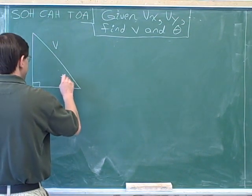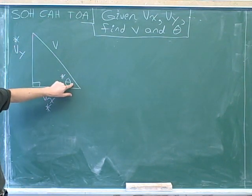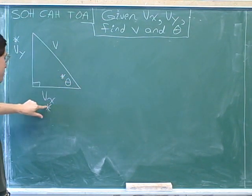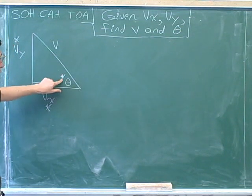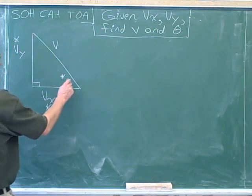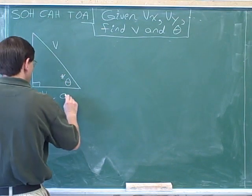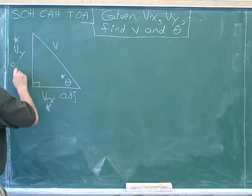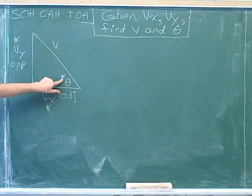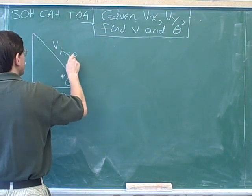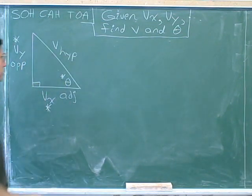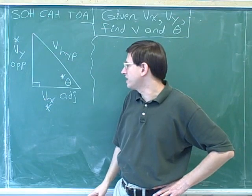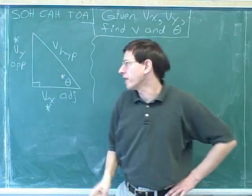I'm also going to put an asterisk on theta — not because we've been given theta, but just to remind me to focus on this angle. We know it's helpful to use an asterisk to label which angle you're focusing on, because now I know that the horizontal side should be labeled as adjacent, the vertical side should be labeled as opposite, and this side is the hypotenuse. These two asterisks remind me that we have been given two sides and have to find the third side.